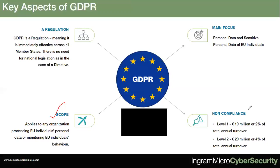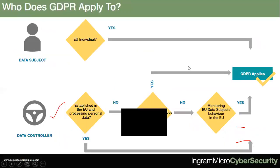One of the reasons GDPR has been given really strong teeth is the fines. Fines can be as high as 20 million euros or 4% of your worldwide annual turnover, whichever is higher. Level one fines start at a minimum of 10 million euros, and level two fines can be as high as 20 million euros or 4%, whichever is higher. These are significant fines and one of the areas where GDPR is far stronger than most privacy regulations. It's just a matter of time before the first organization to be levied a fine comes out in the news.